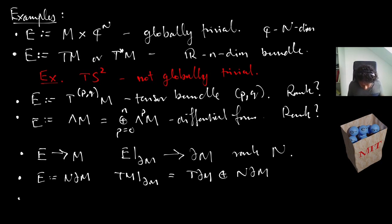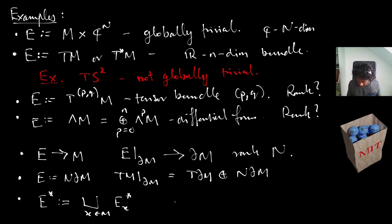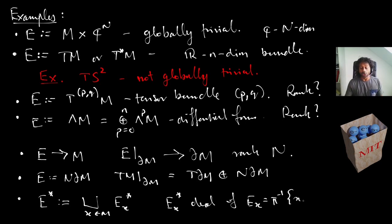Another very important example is the dual bundle — the disjoint union of the dual fibers, where the dual fiber at x is the dual vector space of E_x, i.e., the preimage via the projection map.